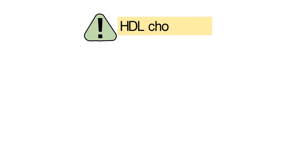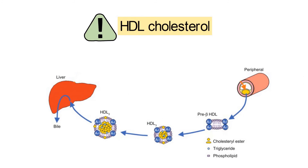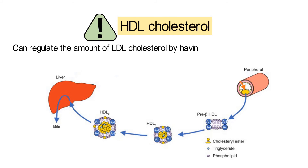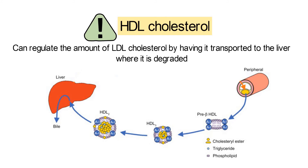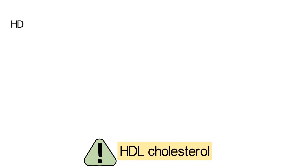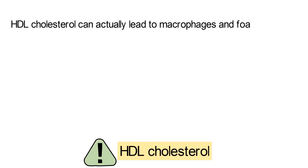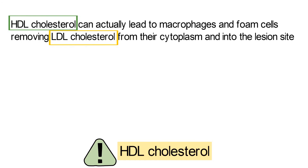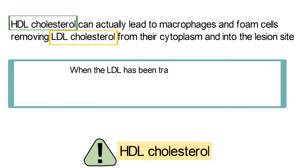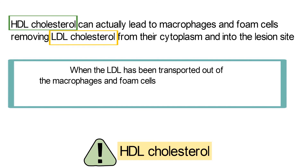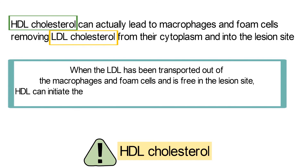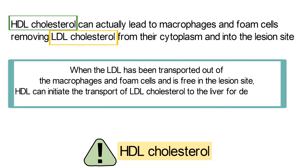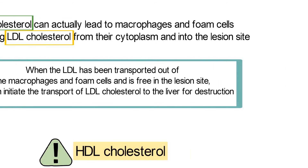HDL cholesterol also plays an important role in prevention and treatment of atherosclerosis. HDL cholesterol can regulate the amount of LDL cholesterol by having it transported to the liver where it is degraded. Furthermore, HDL cholesterol can actually lead to macrophages and foam cells removing LDL cholesterol from their cytoplasm and into the lesion site. When the LDL has been transported out of the macrophages and foam cells and is free in the lesion site, HDL can initiate the transport of LDL cholesterol to the liver for destruction.